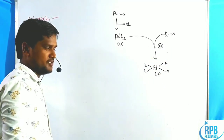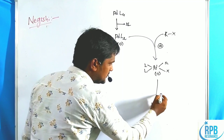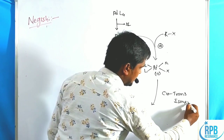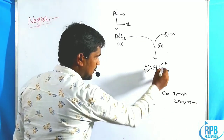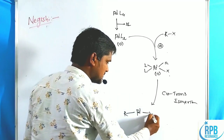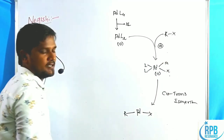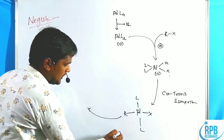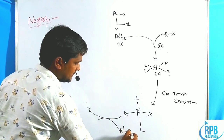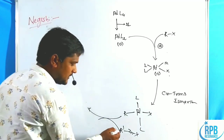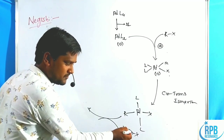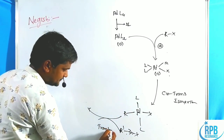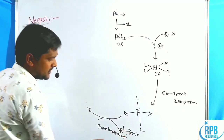In the first step, the complex undergoes oxidative addition. In the second step, it undergoes cis-to-trans isomerization, where the R and X groups, originally oriented cis to each other, become trans. Then we use the organozinc reagent R'-ZnX. Here R' is transferred from the zinc metal to palladium — this is called transmetalation.